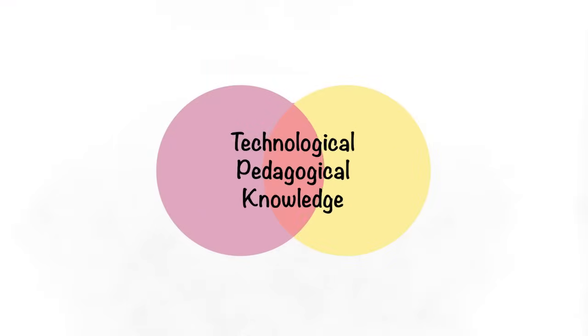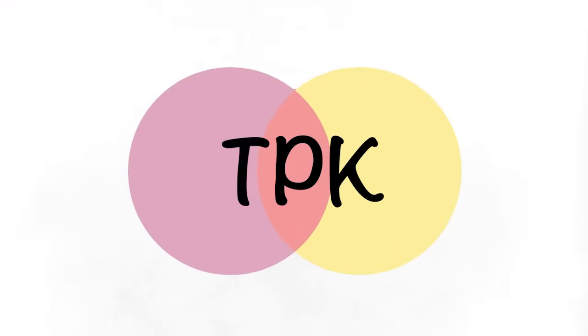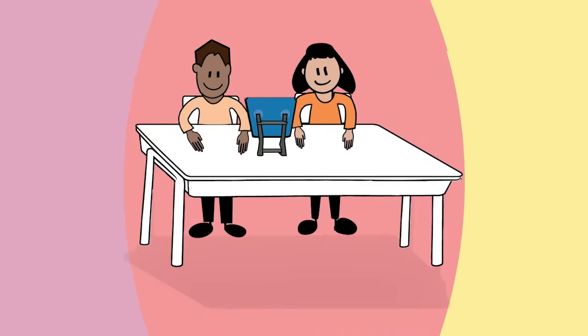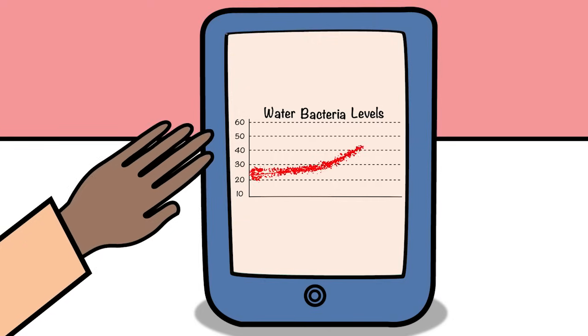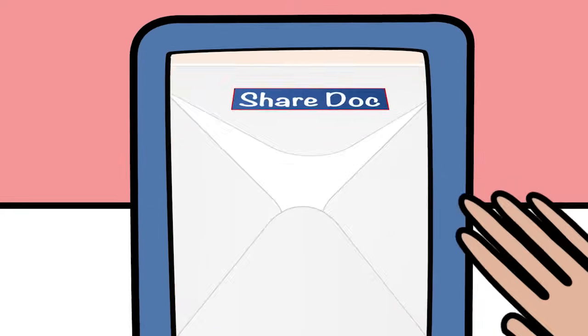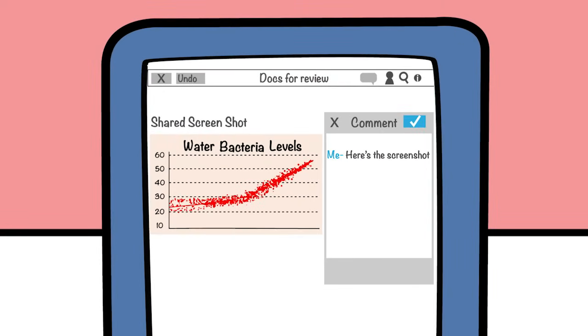Technological Pedagogical Knowledge, or TPK, is your understanding of how to choose and manage technology for your students. For instance, what technology will best ease your students' workflow throughout their exploration of the scientific method? How can you use collaboration tools to have students share their learning with each other? This knowledge about technology will advance your teaching.